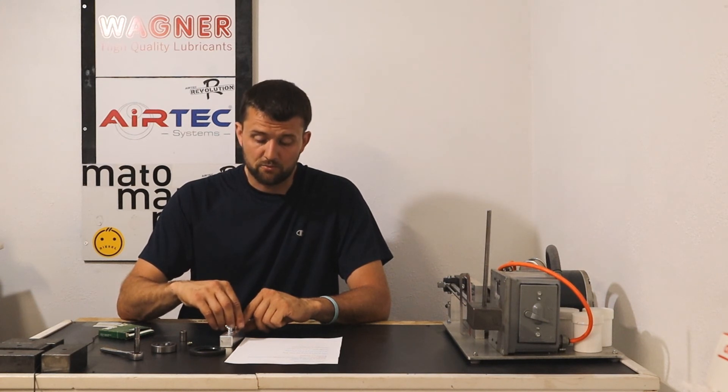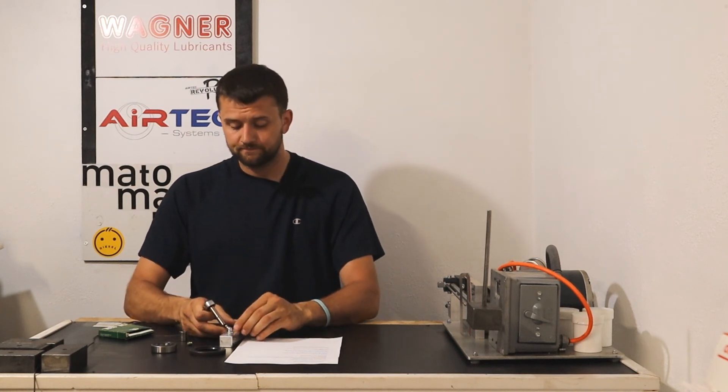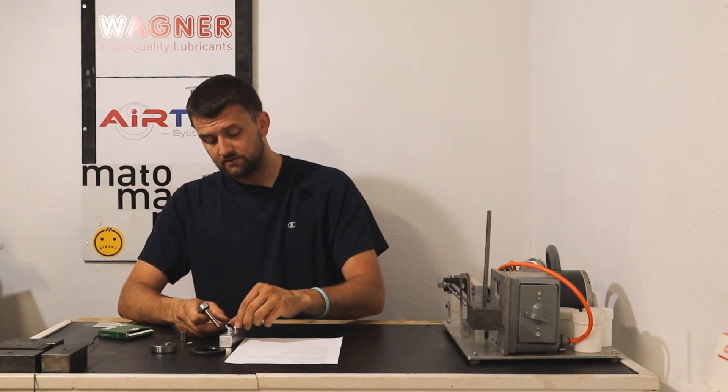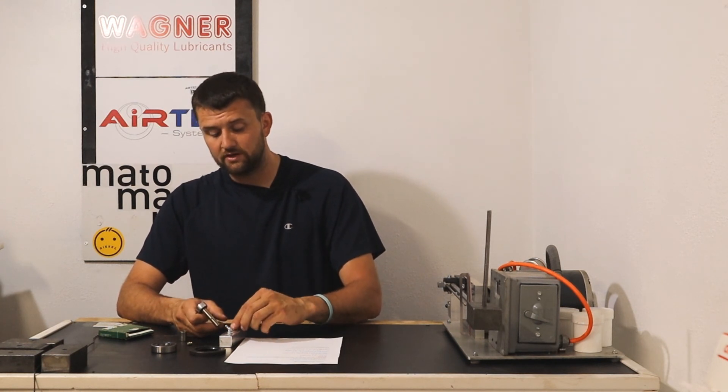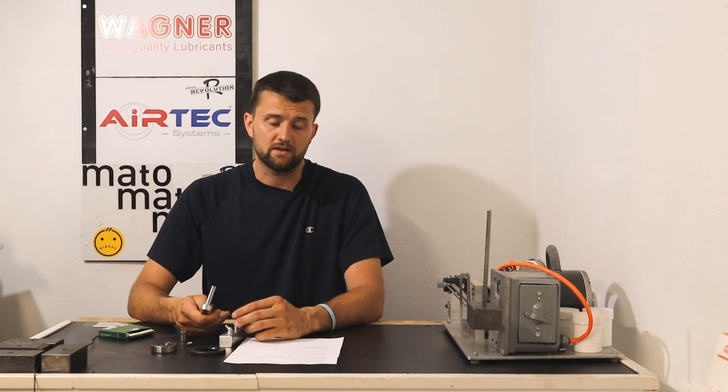So to remove a zerk fitting, all you're going to need is a socket, small socket. They don't take a lot of pressure. If you have a metric zerk fitting, typically they're seven millimeter or 10 millimeter. So you just need a socket, go on there, ratchet that out, inspect it, put the new zerk fitting in, and just run it up snug, tight.